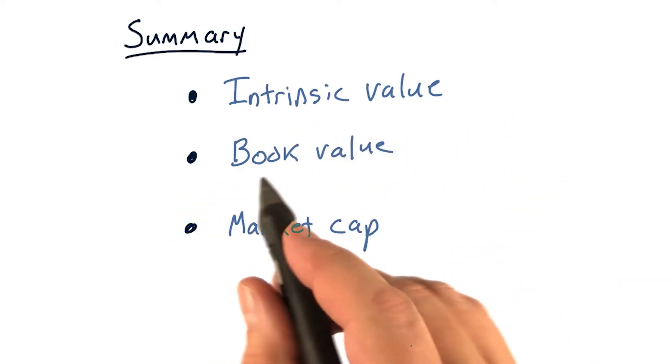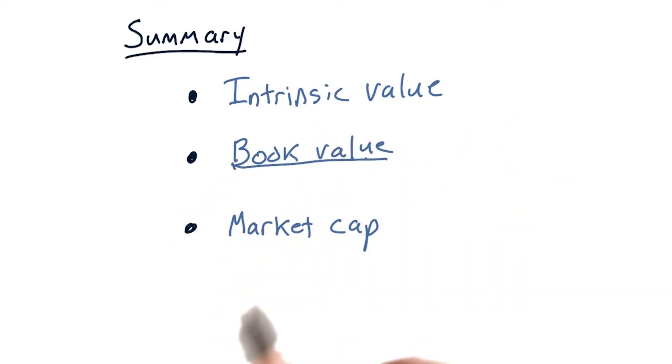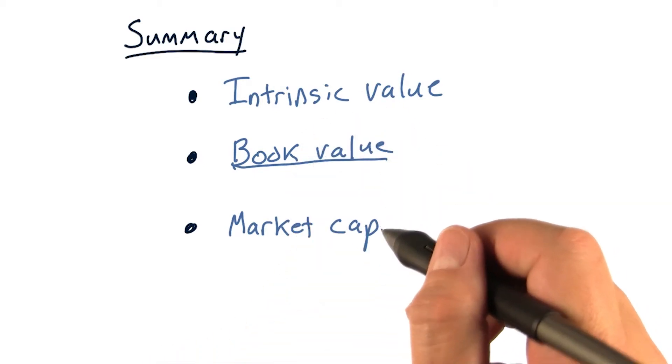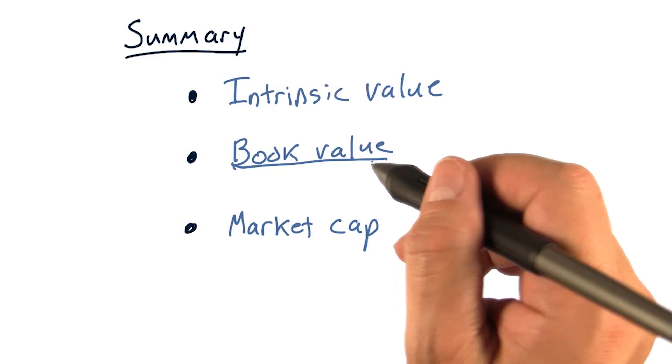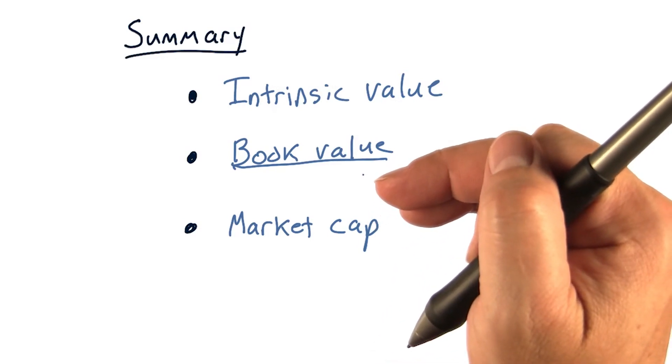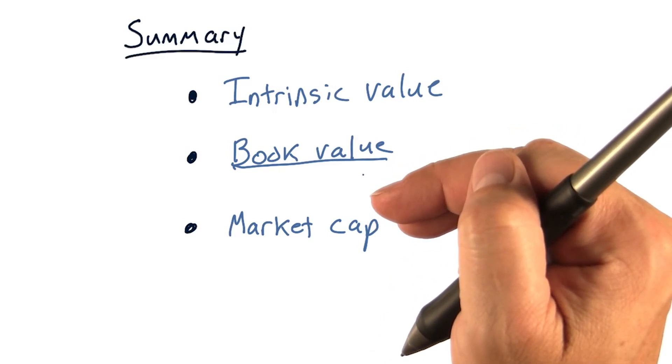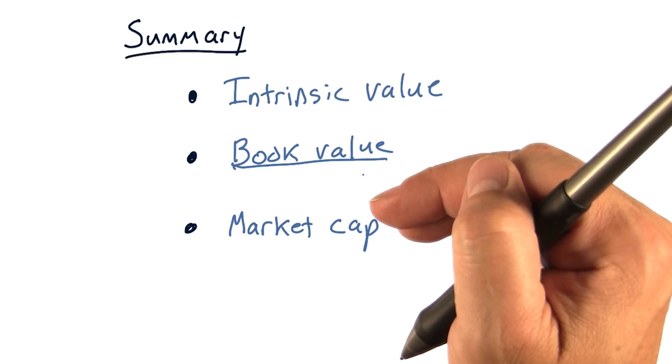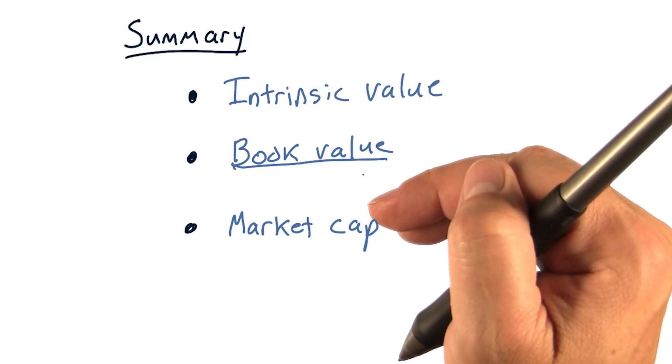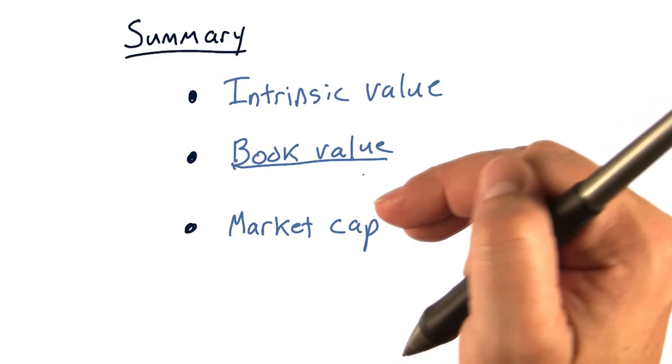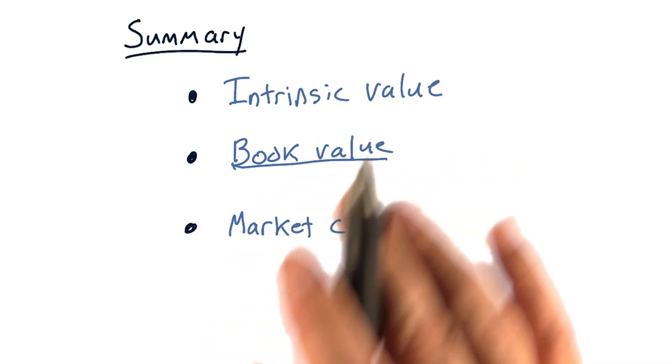And similarly, book value provides a sort of lowest price. When stock price begins to approach book value, you can pretty much assume that the price is not going to go below book value or not much below it. Because if it does, a predatory buyer would buy the whole company and break it up for parts.